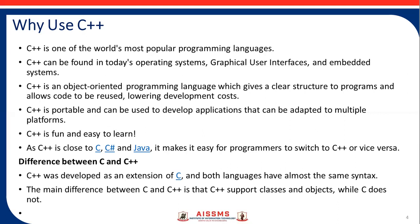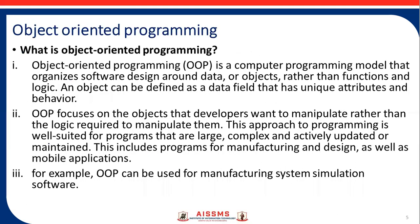What is the difference between C and C++? C is basically a procedural programming language, and C++ is an object-oriented language. C++ was developed as an extension of C, and both languages have almost the same syntax. The main difference is that C++ supports classes and objects, while C does not.